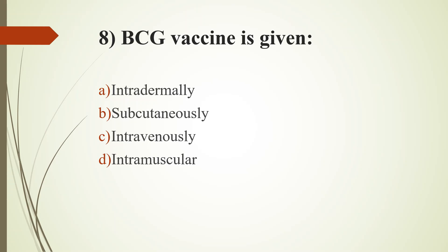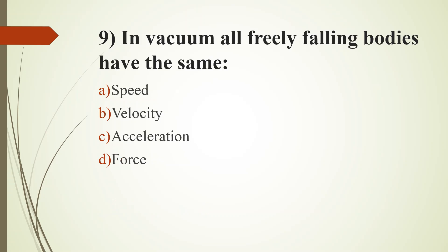Eighth question, BCG vaccine is given: option A, intradermally; option B, subcutaneously; option C, intravenously; option D, intramuscular. Answer is option A, intradermally. Ninth question, in vacuum, all freely falling bodies have the same: option A, speed; option B, velocity; option C, acceleration; option D, force. Answer is option C, acceleration.